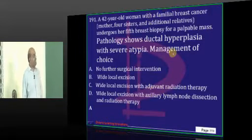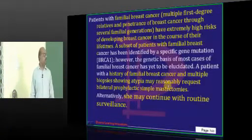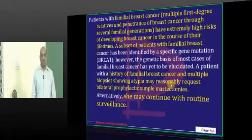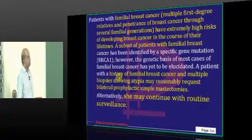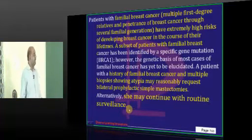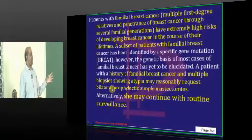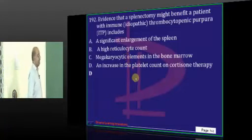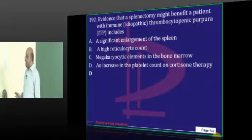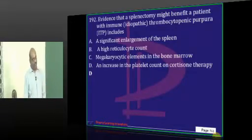A 42-year-old with familial breast cancer showing ductal hyperplasia with atypia — sisters and aunties all had breast cancer. The risk of developing breast cancer is quite high. Options are continued routine surveillance, or prophylactic simple mastectomy if BRCA1 gene positivity is present. If you give cortisone in ITP, since it is an autoimmune destruction of platelets, platelet count will definitely improve.